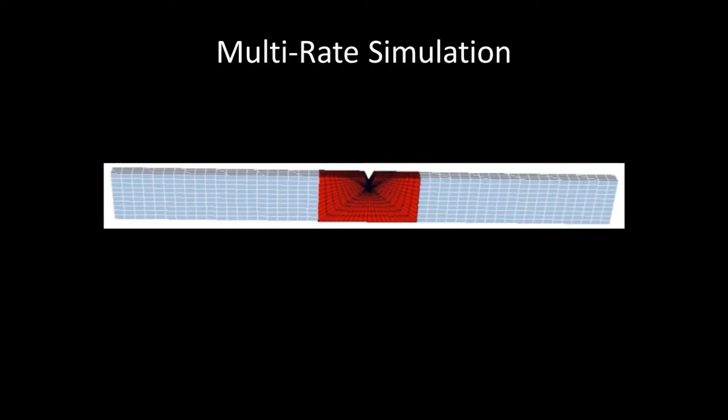You can see that the mesh decreases in size around the notch, which better captures the behavior at that point. This is a good step towards optimizing computer resources, but a traditional computer simulation will still simulate the entire bar at once, even if there is nothing interesting going on at the ends, so to speak. A multi-rate approach allows us to simulate the noteworthy area around the notch at a finer time scale, and thus more accurately than the rest of the bar.